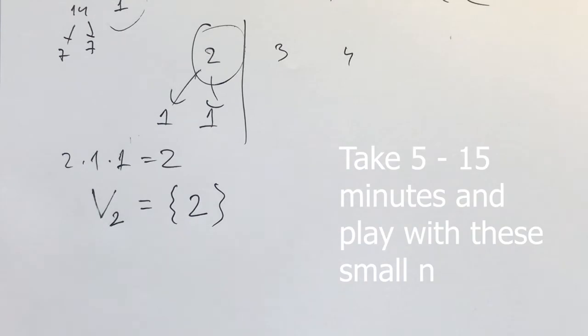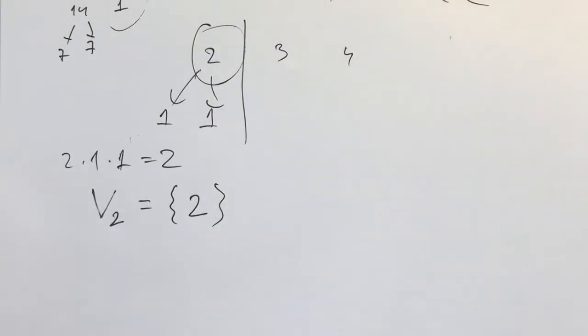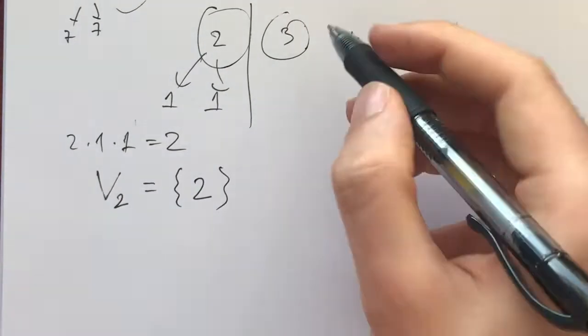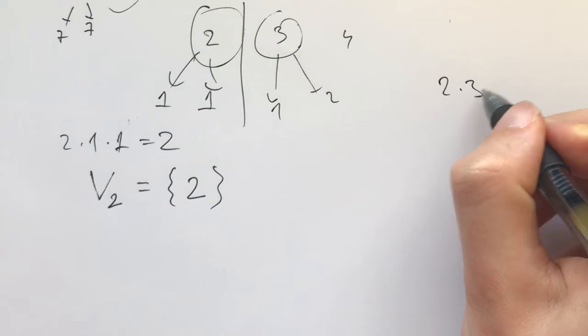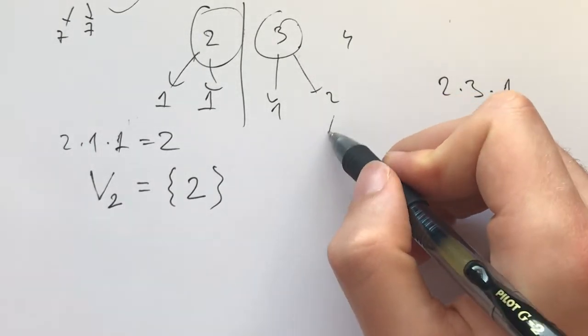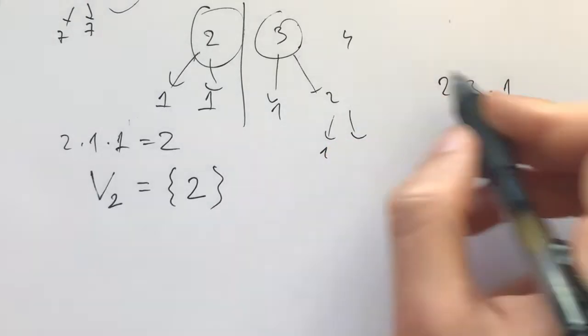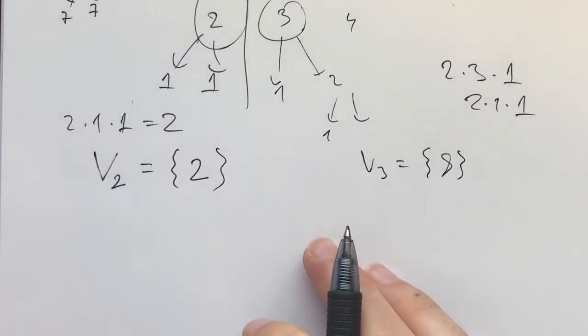Now, I invite you to take 5 to 15 minutes and find what V3 and V4 are. Now that I've given you enough time to pause for 3, what we have, well we need to break it down into 2 and 1, and then we'll write 2 times 3 times 1, and then we break this one into 1 and 1, and we write 2 times 1 times 1. The sum for V3 is going to be 8, it's the only, it's very deterministic.